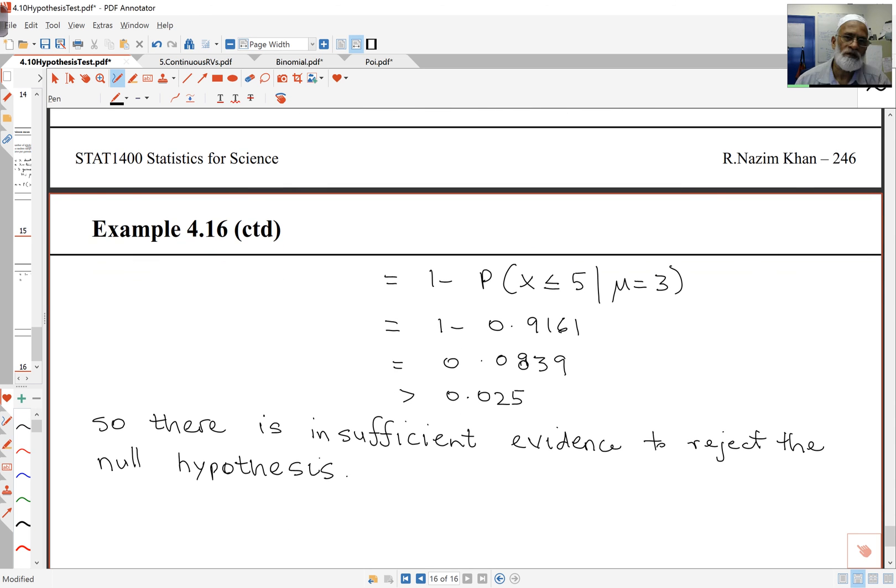While we actually observed six flaws on three garments and expected three, getting twice as many, even then we don't reject the null hypothesis. In other words, there's natural variation, so even if the average is one per garment, you can get six in three garments.